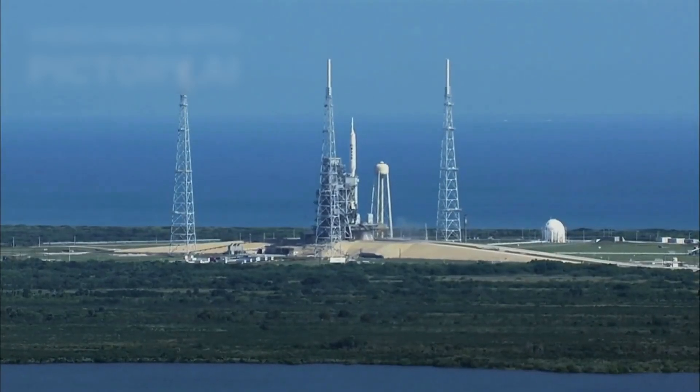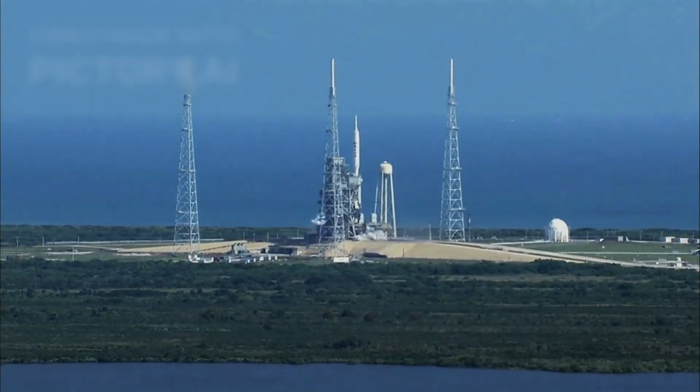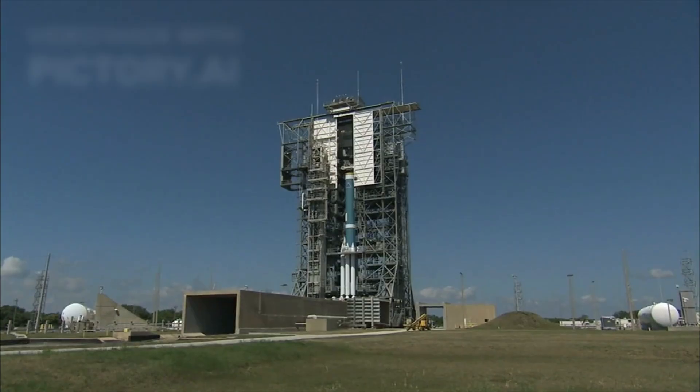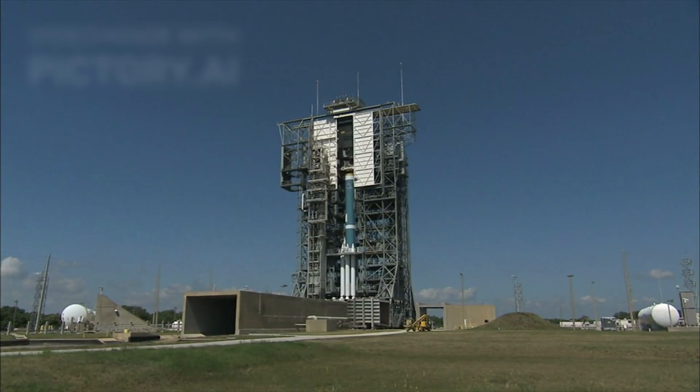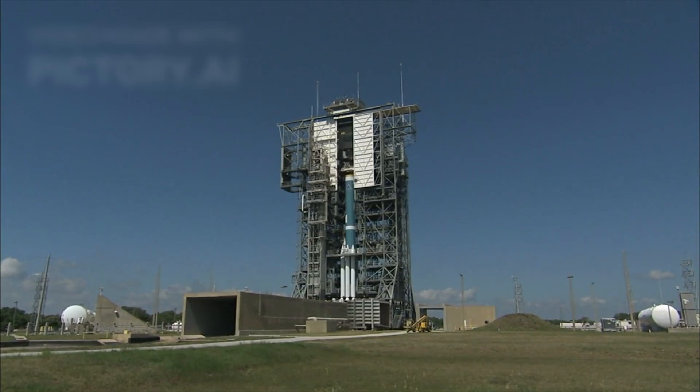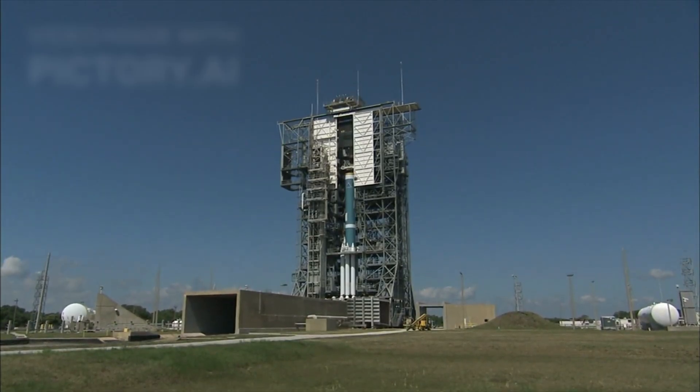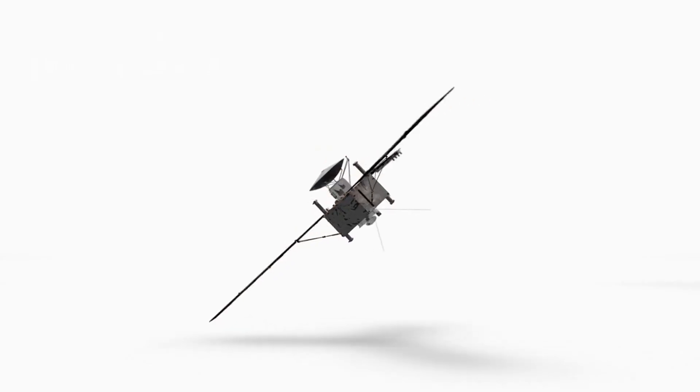On September 5, 1977, something extraordinary left Earth. A robotic spacecraft no bigger than a small car rose into the sky atop a column of fire and vanished into the black above our planet. Its name was Voyager 1.